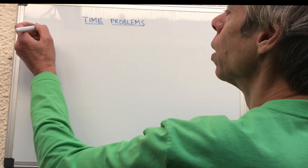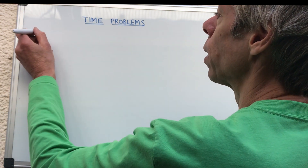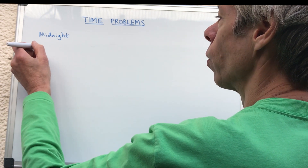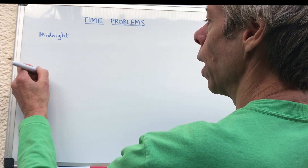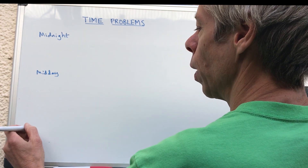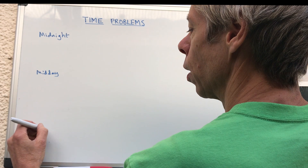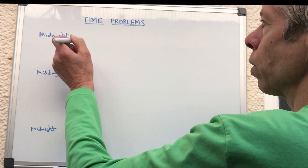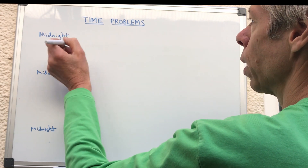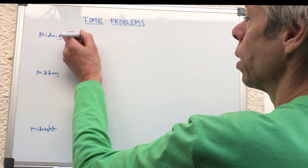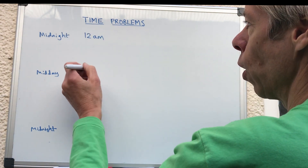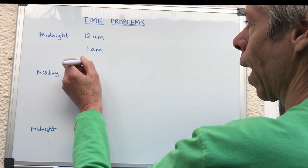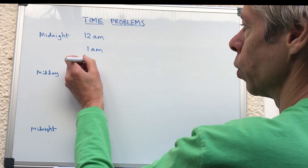In the 12-hour clock, you start off at midnight, go through midday, and then end up at midnight again. Midnight is when the day begins — most of us are just in bed — and that is known as 12 a.m. After a certain time the next hour will be 1 a.m., and you might get up about 7 a.m.